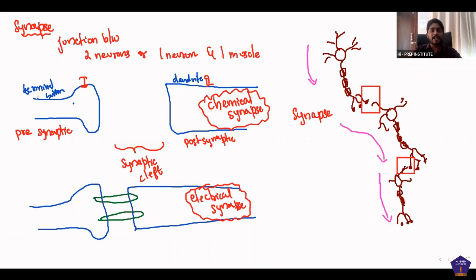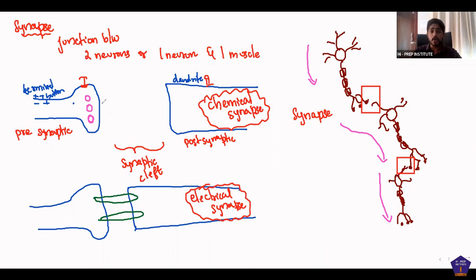This is the action potential. Positive, negative charge suppression. The action potential travels along the neuron.